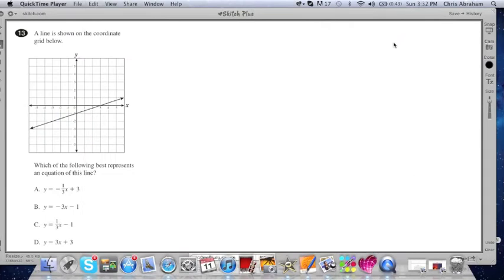Hi, team. So I have a question here, number 13. Just by visually looking at it, I see that it's a coordinate grid with an x and y axis, and it has a line. And the question goes, a line is shown on the coordinate grid below. And then it says, which of the following best represents an equation of this line?